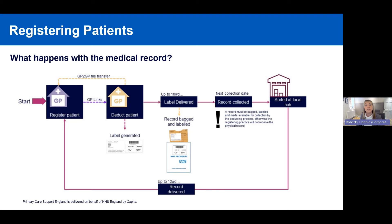Once the record has been collected from the deducting practice, it will be transported and delivered to the new practice. As shown on the diagram, some records will need to be sent via GP Links file transfer electronically, while some will need to be sent manually. If you've got a patient registering from a home nation, it will need to be a physical record movement. You can usually identify that by the label — it will have a three-character code such as SCO for Scotland.